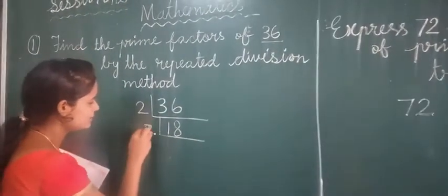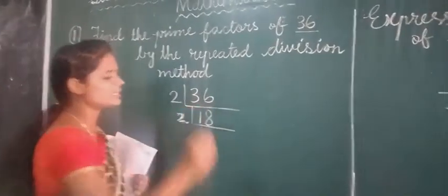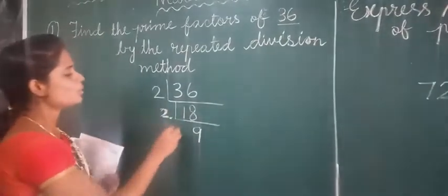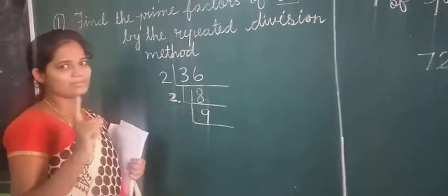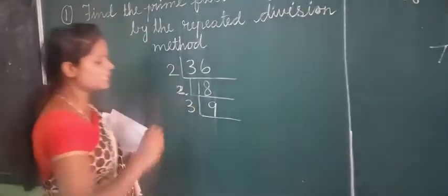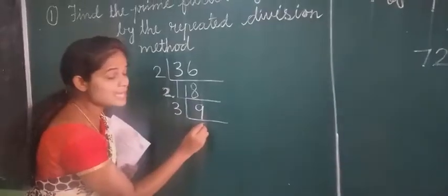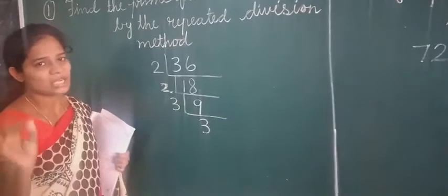Again, this 18 will go with which table? Second table. How many 2's are there in 18? 9 2's are 18. Now you have to think here, which table to use? Will second table go with 9? No, it will not go, right? So we have to use which table? Third table. How many 3's are there in 9? 3 3's are 9. Can we go more than this? No, we cannot go anymore.